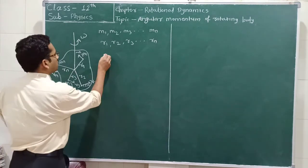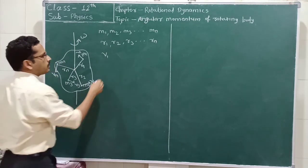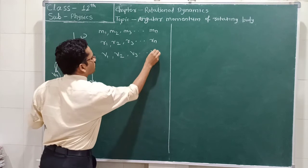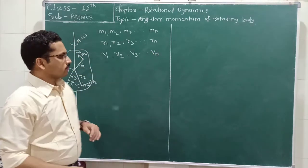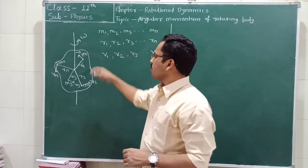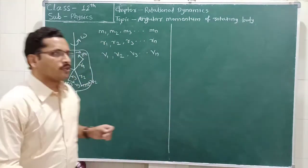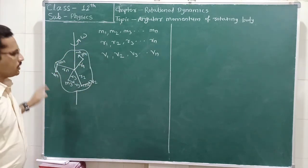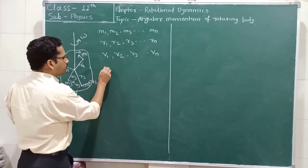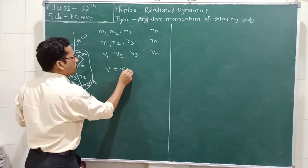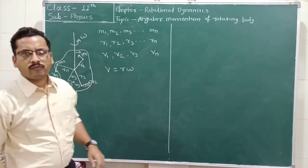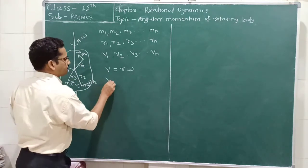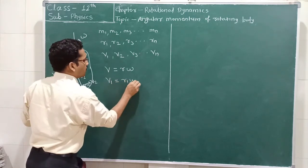Suppose the linear velocity of the first particle is V1, that of the second particle V2, and the third particle V3 up to Vn. This body is rotated with angular velocity omega. We use the relation from 11th class: linear velocity V is equal to R multiplied by angular velocity omega. For the first particle, V1 is equal to R1 into omega.